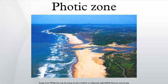Accordingly, its thickness depends on the extent of light attenuation in the water column. Typical euphotic depths vary from only a few centimeters in highly turbid eutrophic lakes, to around 200 meters in the open ocean. It also varies with seasonal changes in turbidity.